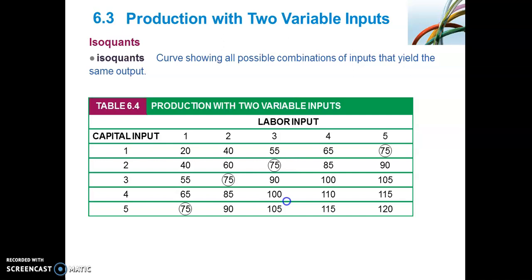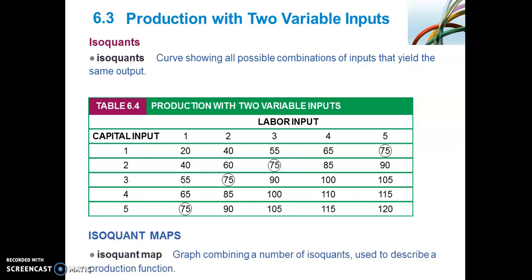Recalling from chapter 3, we learnt about indifference curves showing the different combinations of two goods that yield the same level of satisfaction for the consumer. Now, turning our attention to the supply side of production, we have a curve called an isoquant. An isoquant shows the different combinations of inputs — labour and capital — that will yield the same output. An isoquant map, similar to an indifference map, represents a graph combining a number of isoquants to describe a production function.